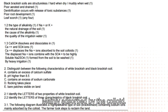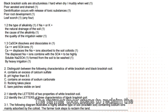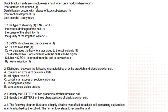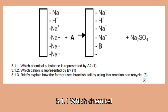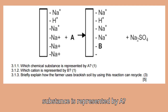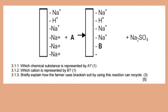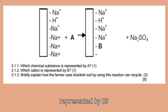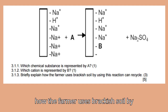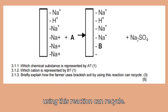8.5 — mainly adsorbed by the colloid. The farmer took steps to reclaim the land. 3.1 Which chemical substance is represented by A? 3.1 Which cation is represented by B? 3.3 Briefly explain how the farmer can reclaim the brackish soil using this reaction.